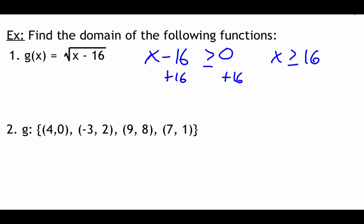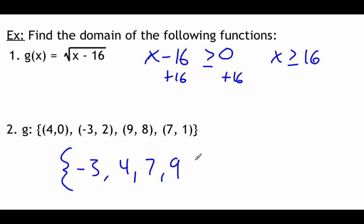For the last example, we're given ordered pairs: (4, 0), (negative 3, 2), (9, 8), and (7, 1). The domain is related to x values, so the domain is just the x values listed in numerical order: negative 3, 4, 7, 9.